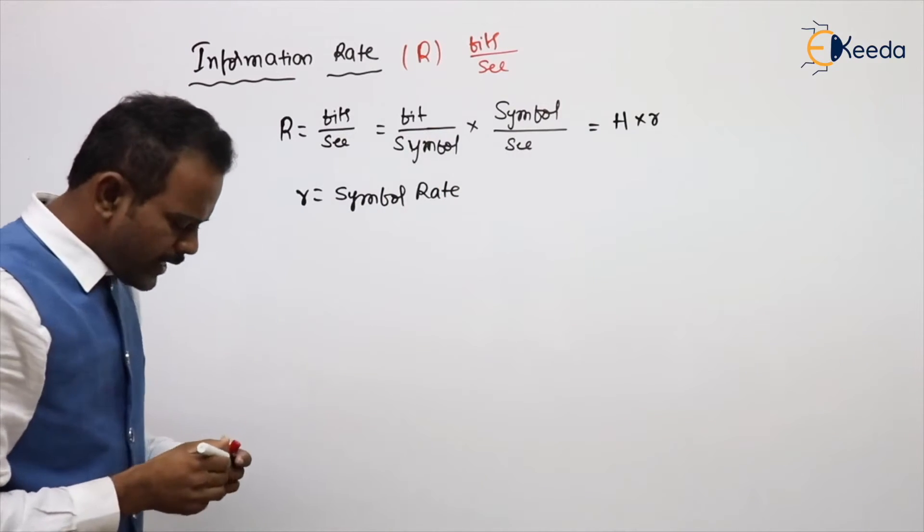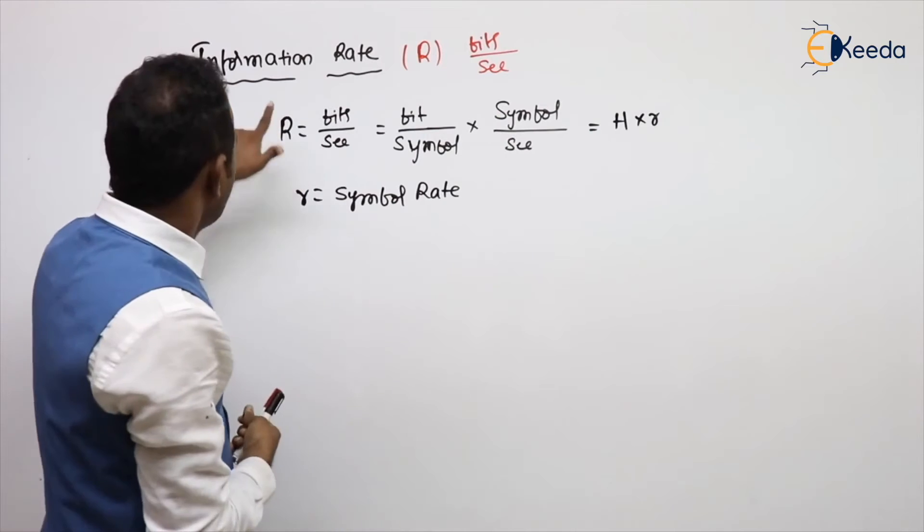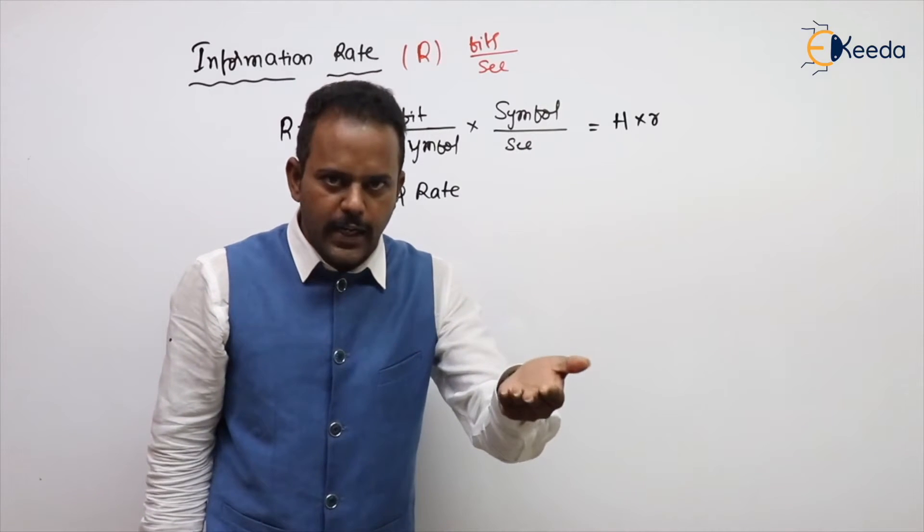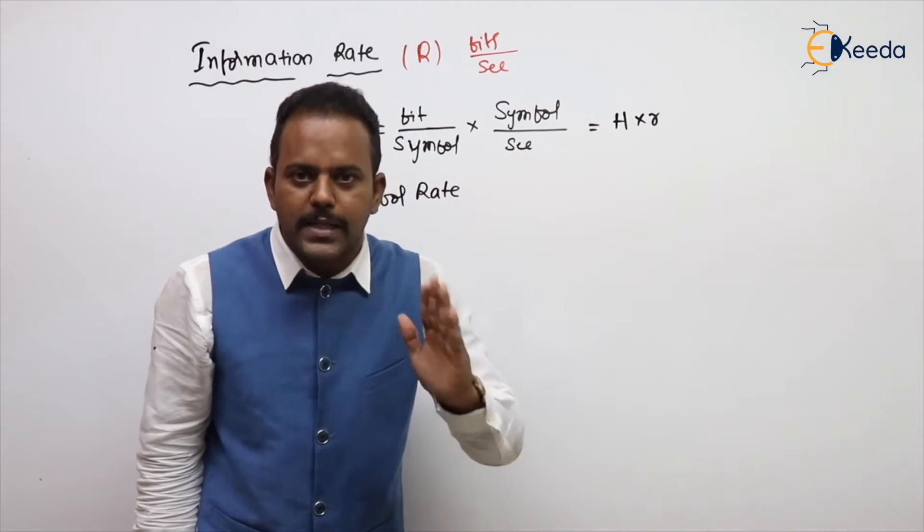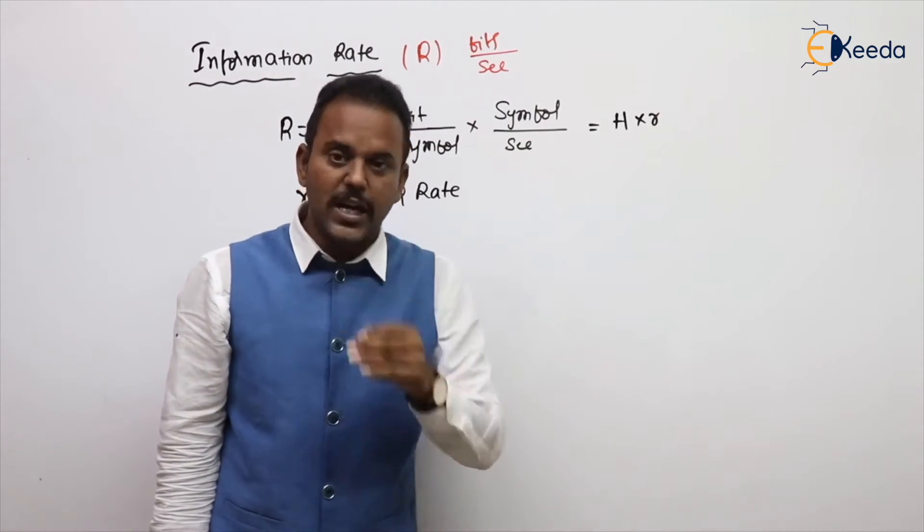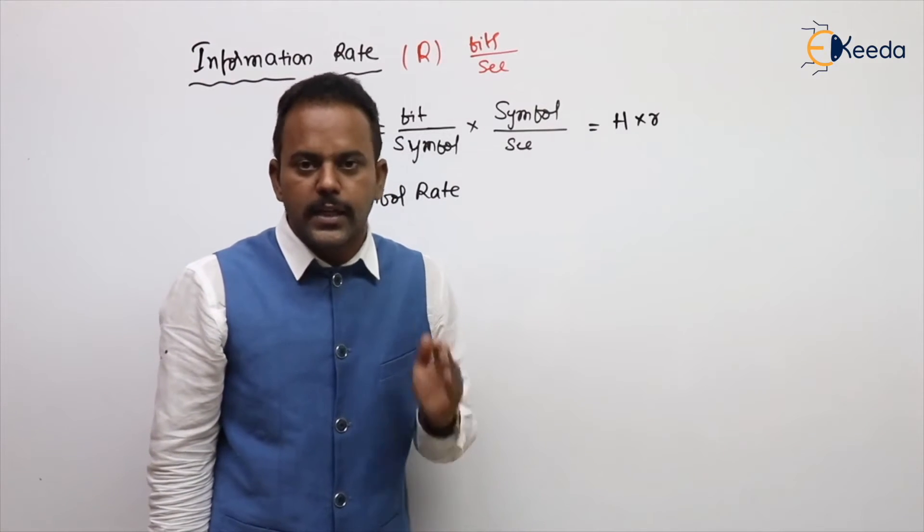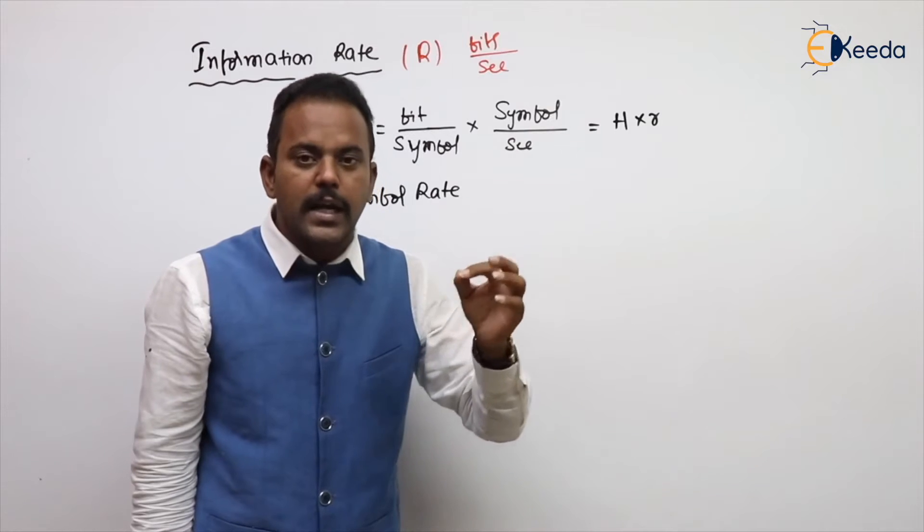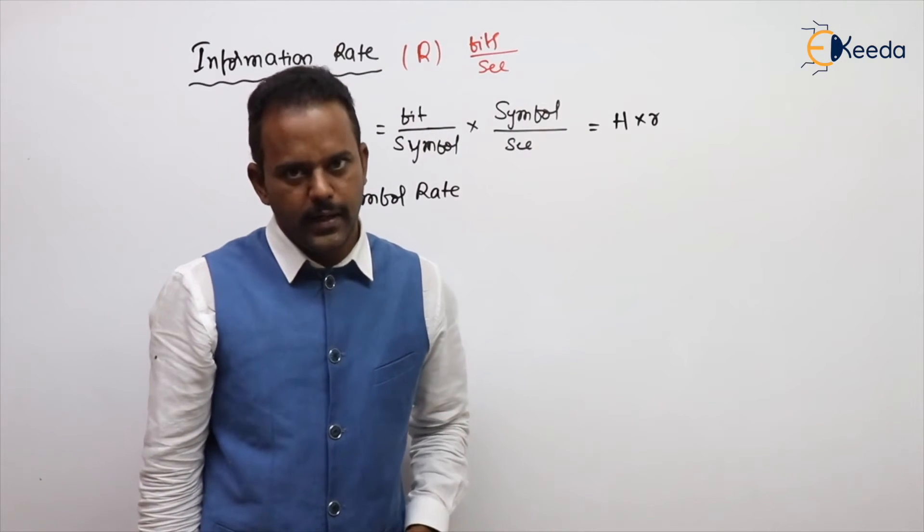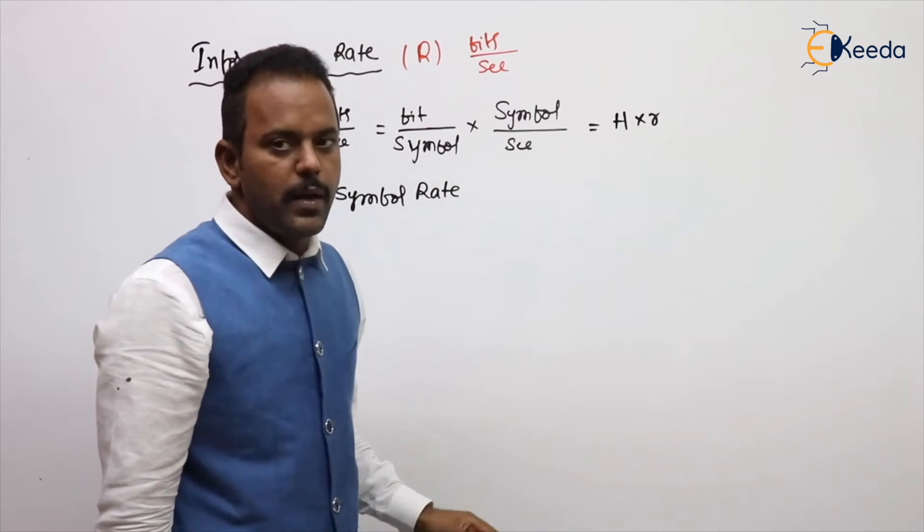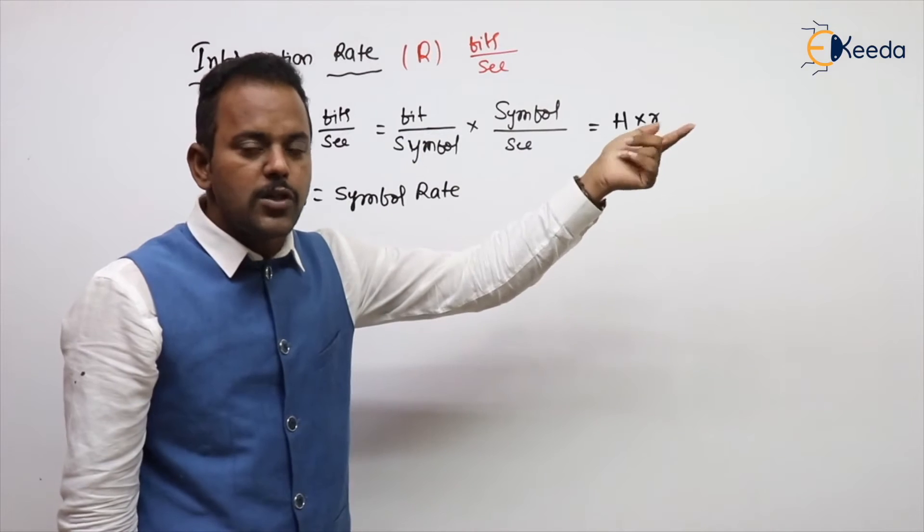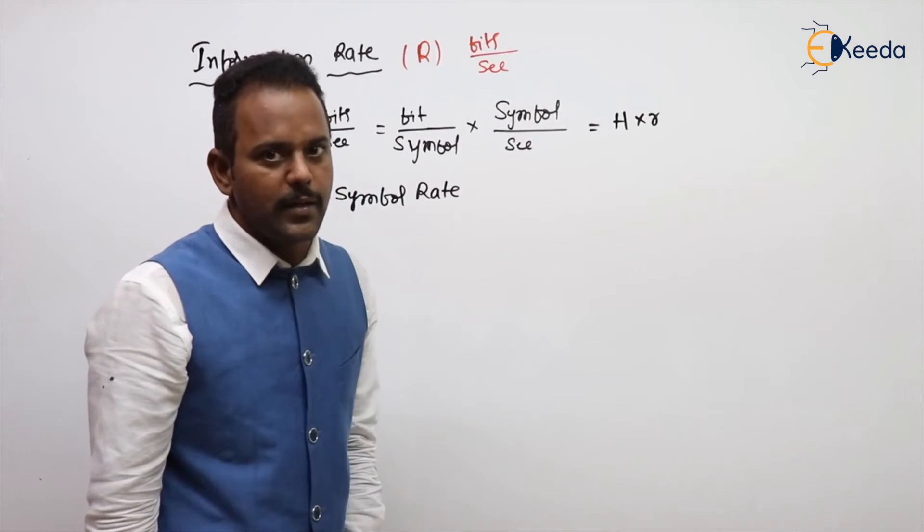What is the information rate meaning? Information rate means how many bits the transmitter is generating per second. Later we will get one more point, that is called channel capacity. Channel capacity means how many bits are carried by channel per second. Information rate means how many bits generated by transmitter per second. Got my point?